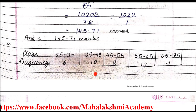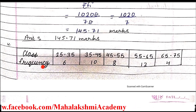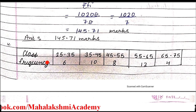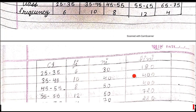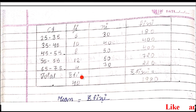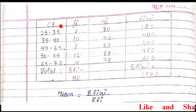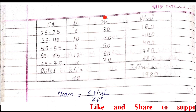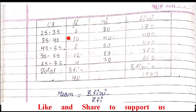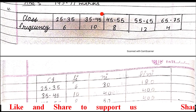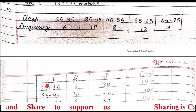Now question number 4: again we have to find out the mean of this frequency distribution table, and again the data are in groups. To find out the mean, the table format is the same as questions 1, 2, and 3 — CI, fi, xi, and fi·xi. The CI column is filled from the question, so we enter the class intervals here.